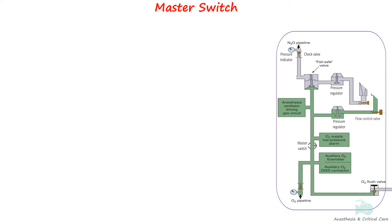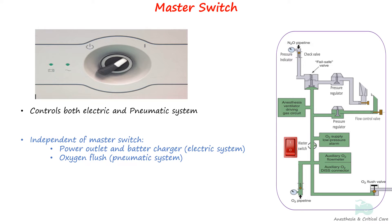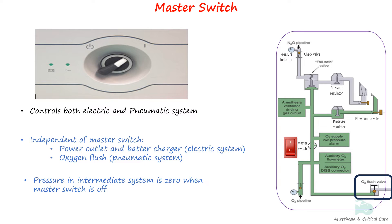The pneumatic portion of the master switch is located in the intermediate pressure system, downstream of the inlets for cylinder and pipeline supplies. It controls various components of both the electric and pneumatic systems. Electrical outlets and battery charger remain active when the master switch is off, and the oxygen flush button can also be activated independently without turning on the master switch. When the master switch is turned off, the pressure in the intermediate system will drop to zero.